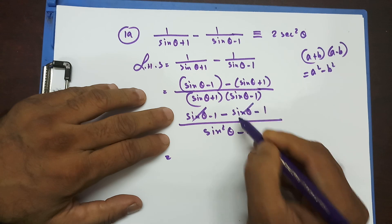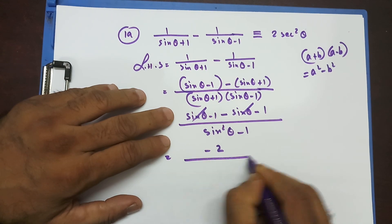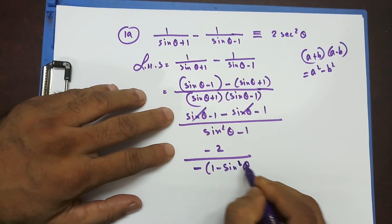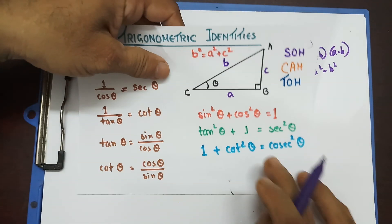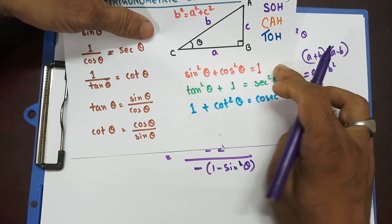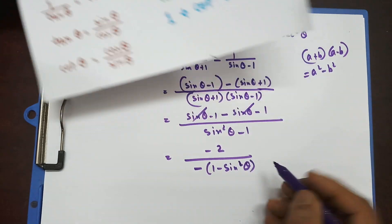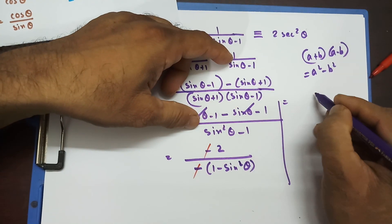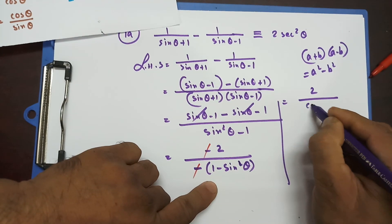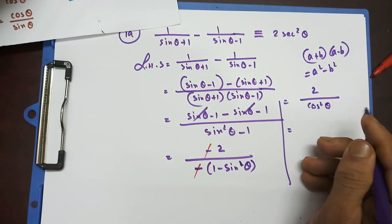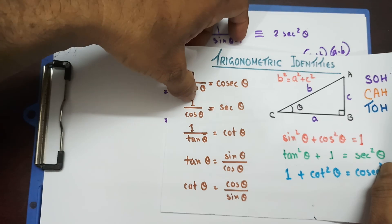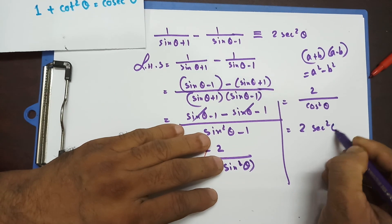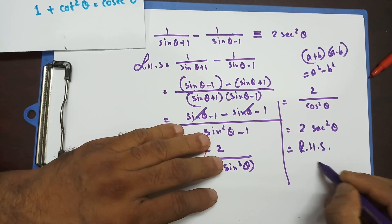These two terms cancel out and on the top I have minus 2. If I take minus common, it becomes 1 minus sin²θ. The reason I take minus common is that 1 minus sin²θ can be replaced by cos²θ. The negative sign cancels out, so on the top I have 2 and in place of the denominator I write cos²θ. And 1/cos²θ gives me sec²θ, which is my right-hand side. Proved.